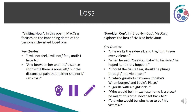Loss occurs in Visiting Hour — McCaig focuses on the impending death of the persona's cherished loved one: 'I will not feel, I will not feel until I have to' and 'the distance of pain that neither she nor I can cross.' In Brooklyn Cop, McCaig explores the loss of civilised behaviour. Key quotes: 'He walks the sidewalk in the thin tissue over violence', 'See you babe, to his wife, he hoped it, he truly hoped it', 'Should the tissue tear? Should he plunge through into violence?', 'What gunshots between Phoebe's Wamburger and Lou's place?', 'Gorilla with a nightstick?', 'whose home is a place he might this time never get back to', and 'who would be who have to be his victims?'